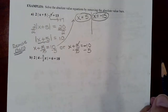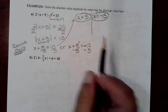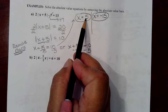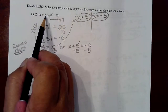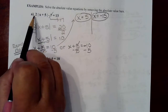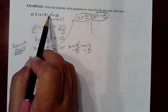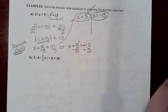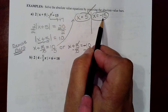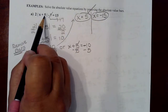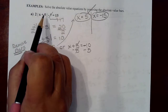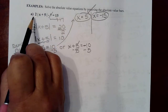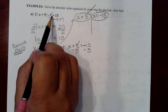They can be checked easily right in the original absolute value equation. For x = 5: five plus five is 10, absolute value of 10 is 10, 10 times 2 is 20, minus 7 is 13 — that checks out. For x = -15: negative 15 plus 5 is negative 10, absolute value of negative 10 is 10, 10 times 2 is 20, minus 7 is 13 — that also checks out.